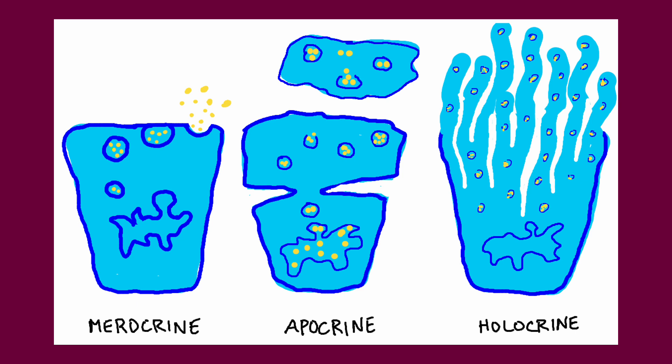Apocrine secretion is often referred to as the decapitation method. Basically, the tops of the cells containing the secretions are pinched off and sent out into the ductal system, like a decapitation. These secretions are usually cloudy and proteinaceous. Breast milk is a really good example.